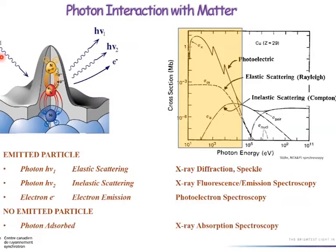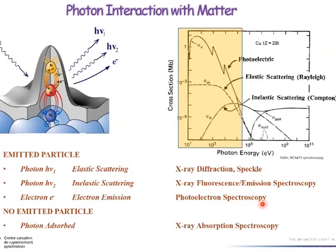The technique available depends highly on the photon interaction with matter. Looking at the incoming photons, the outgoing products could be photons of the same energy, photons of different energy, or electrons. If we look at same-energy photons, that's elastic scattering — diffraction techniques. If we look at photons emitted at different energies, that's inelastic scattering — fluorescence or emission spectroscopy. If we look at emitted electrons, that's photoelectron spectroscopy. And if we measure how many photons are absorbed by the material, that's absorption spectroscopy.